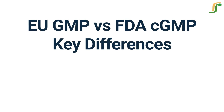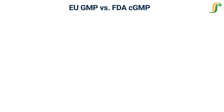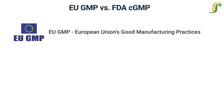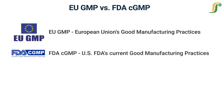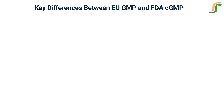Welcome to a new learning video on pharma guidelines. In this video, we will learn the key differences between the EU GMP and the FDA CGMP. Pharmaceutical manufacturing is subject to strict regulations worldwide to ensure that drugs meet high standards of safety, efficacy, and quality. Among the most prominent regulatory frameworks are the European Union's Good Manufacturing Practices (EU GMP) and the US FDA's Current Good Manufacturing Practices (CGMP). This video explores the key differences between EU GMP and FDA CGMP and provides strategies for compliance in both markets.